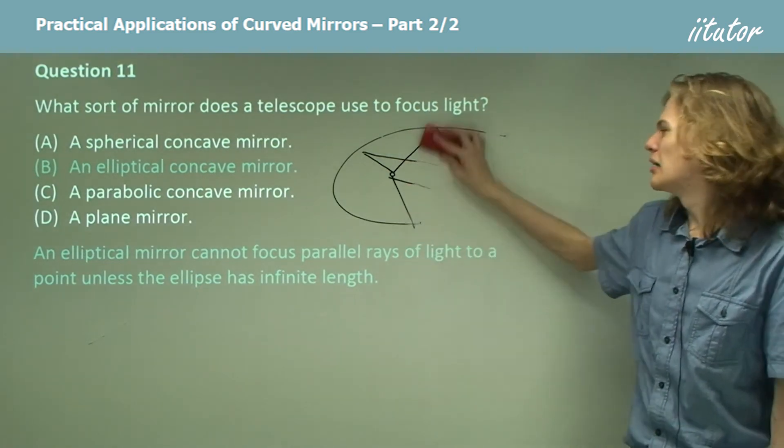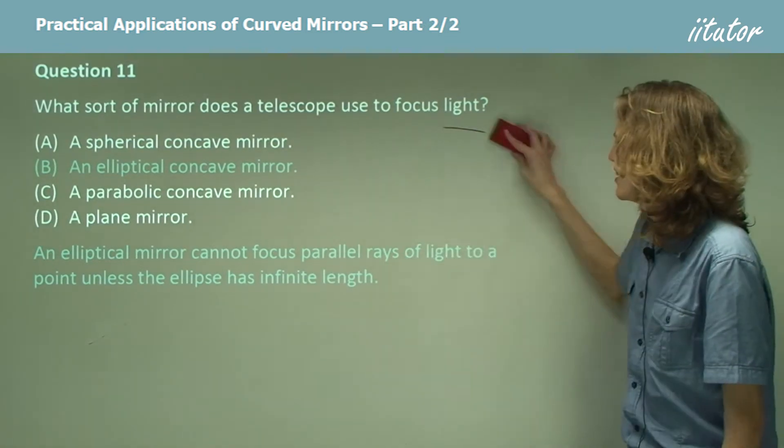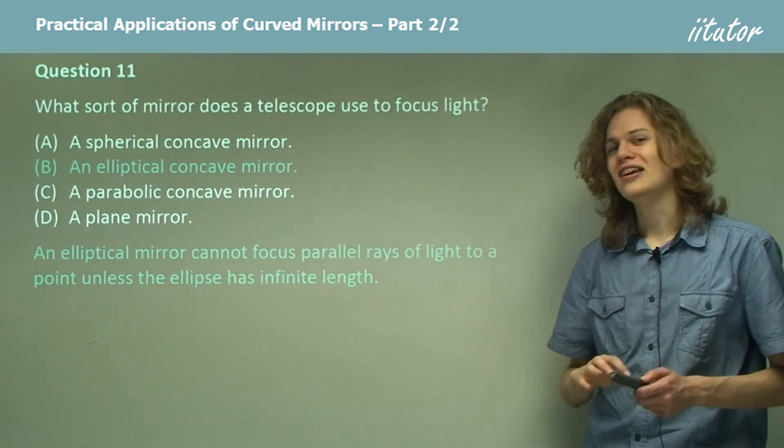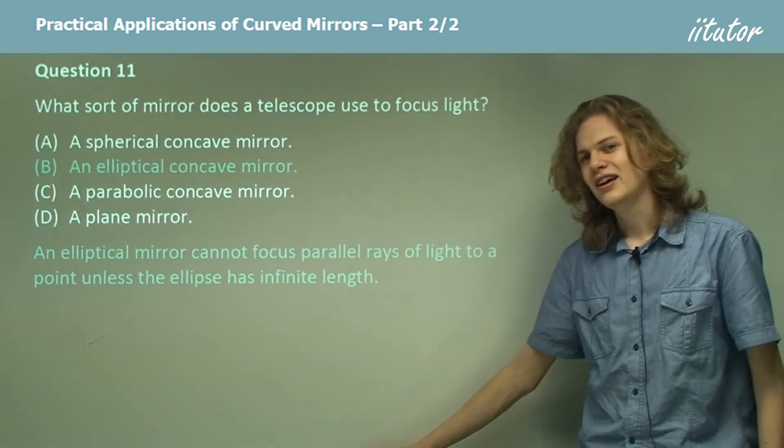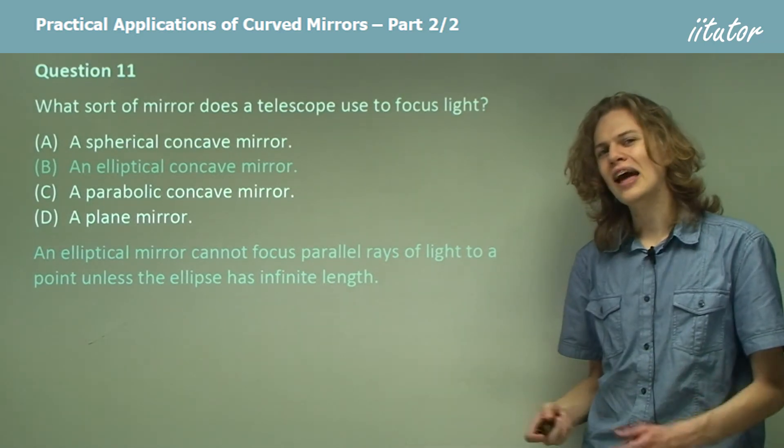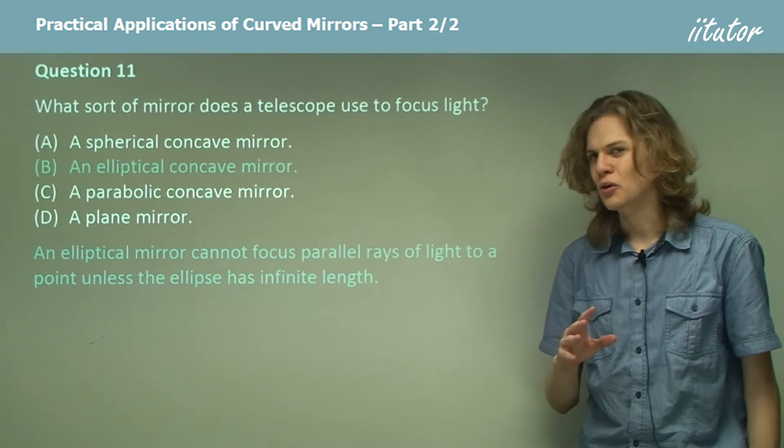The problem is, stars are so far away that we can assume that their distance is practically infinity. And if we have an ellipse, where the two focuses are an infinite distance apart, it turns out that we don't have an ellipse at all. We've got a special case. What exactly does that special case look like? Well, we'll learn in a moment.